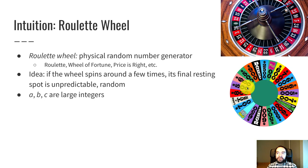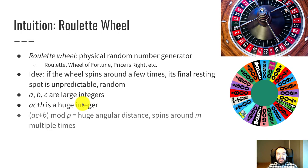So the same kind of intuition carries over to our multiplicative hash scheme. A, B, and C are large integers. So AC plus B is a huge integer. And we ultimately take that mod M and it's hard to predict where that's going to end in that range.